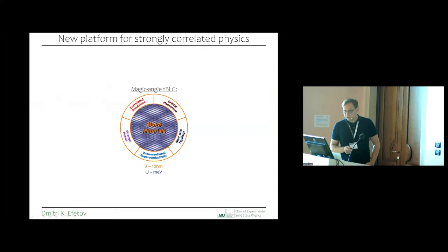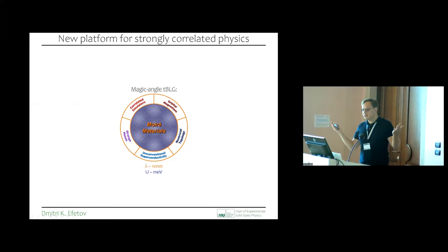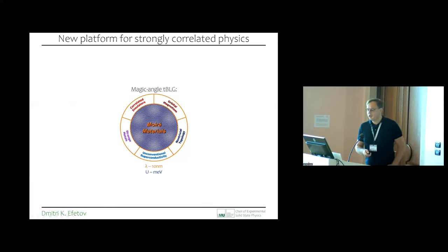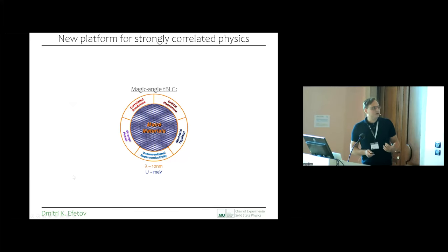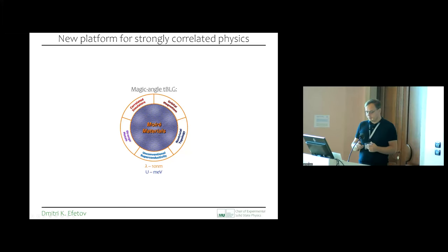Jumping right into it: twisted bilayer graphene was discovered in 2018 when Pablo Herrero from MIT showed that when you take two graphene sheets together and align them with a specific twist angle, you create a so-called moiré potential — an interference pattern between the crystallographic axes. You really find a lot of novel and exciting quantum phases: in particular, superconductivity believed to be unconventional, correlated insulators, strange metal behavior, magnetism, and non-trivial topological behavior. This is really a rich platform showing state-of-the-art aspects of modern condensed matter physics.